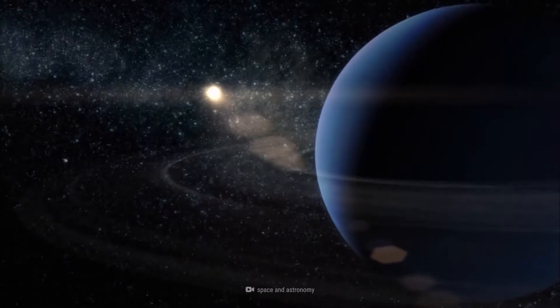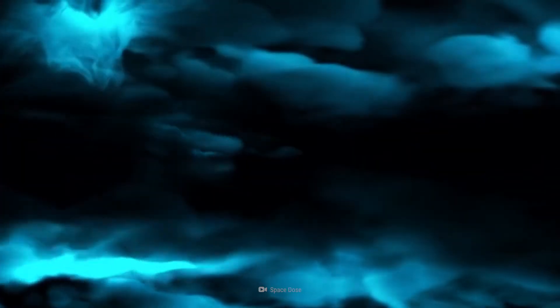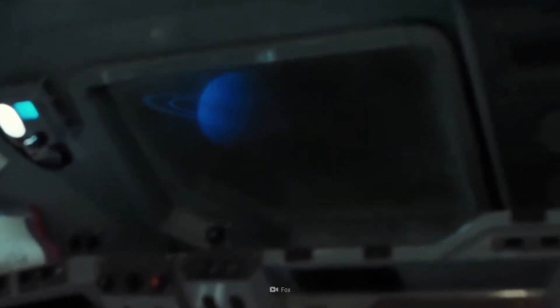Atmospheric Composition: Neptune's atmosphere primarily consists of hydrogen and helium, with traces of other gases such as methane. As a spacecraft descends into the atmosphere, it would experience increasing atmospheric pressure and density.